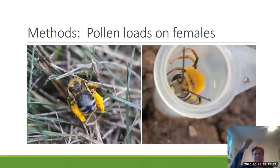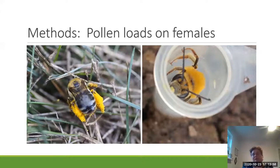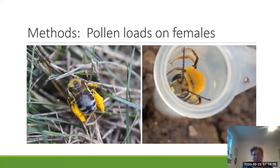For pollen loads on females, I captured the bees as they walked into their nests — I just picked them up. They're very gentle and easy to handle. I put them into a microcentrifuge tube and put them in the fridge overnight, and while they were in the fridge they actually groomed all the pollen off of themselves into the bottom of the tube. I could then release them the next day into a pumpkin patch. Here depicted is what the bee would look like, though that is a male hoary squash bee, not a female.